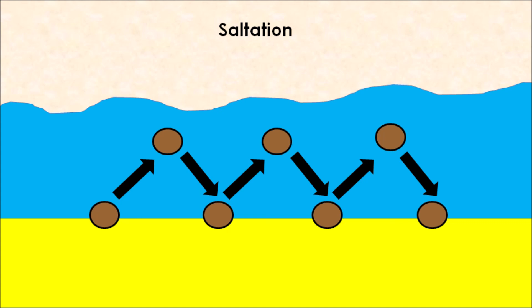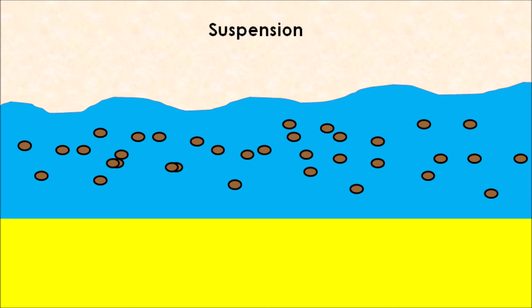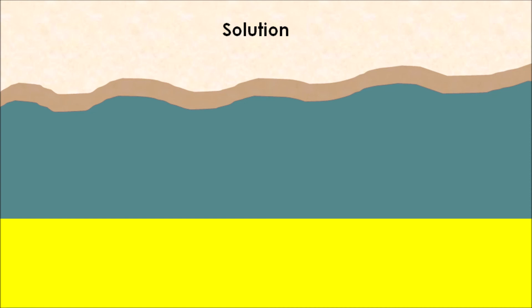We then have suspension, which involves really fine, small particles like silt and clay being carried along in the water. Because they are extremely light they won't sit on the seabed, so they remain suspended and floating within the water, being moved from place to place within the sea.